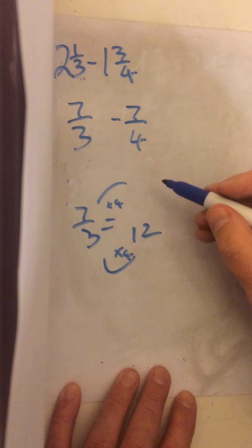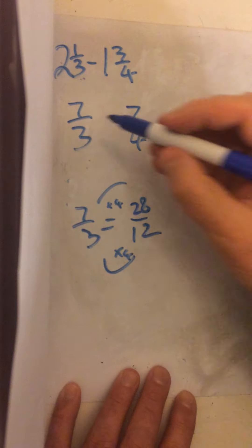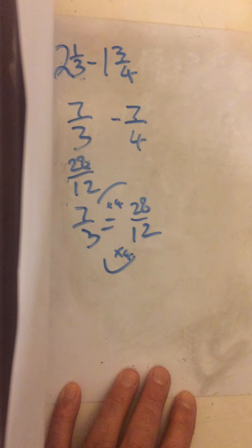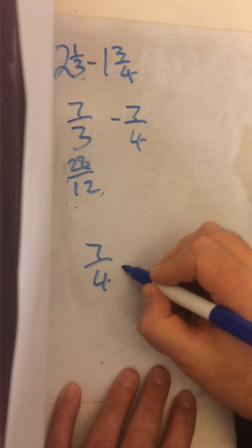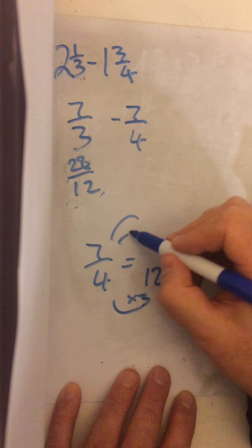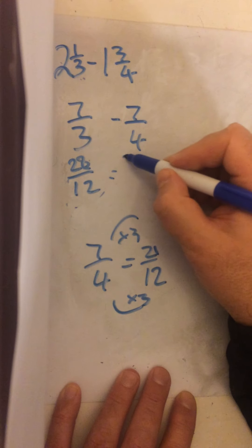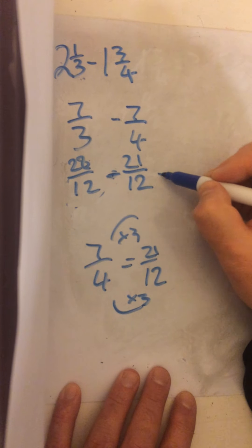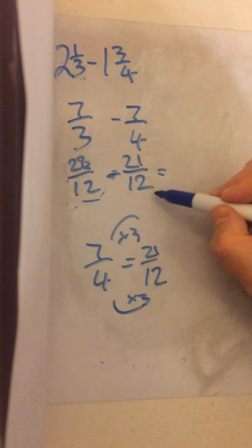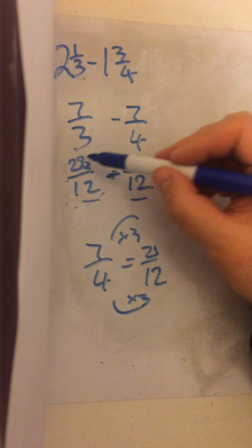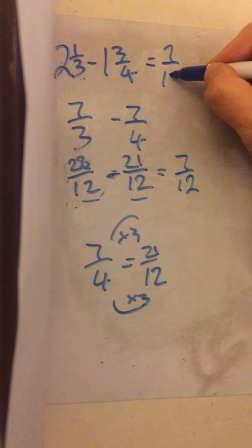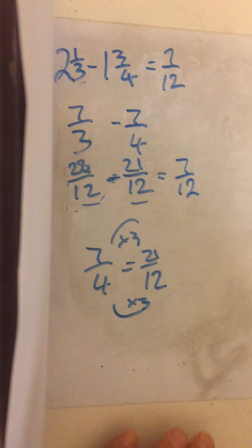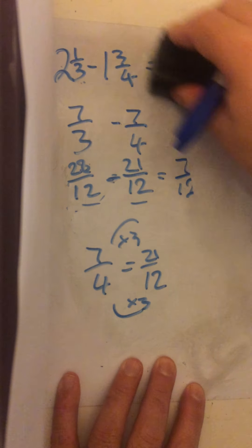Now we find the common denominator. The lowest common multiple of three and four is twelve. Seven-thirds: times by four gives twenty-eight twelfths. Seven-quarters: times by three gives twenty-one twelfths. Now, because we have common denominators, twenty-eight minus twenty-one is seven, so the answer is seven twelfths. Can we simplify seven twelfths? No, we can't. So that's subtraction done.